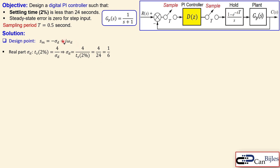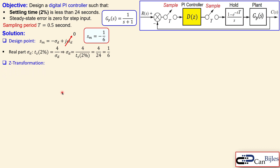Can we also determine omega_d? Omega_d is zero. The only specification besides settling time is zero steady state error, which means there must be a pole at the origin in the S domain (a pole at plus one in the Z domain). There is no overshoot criterion or peak time criterion, so omega_d can be considered as zero. We stick to only the real value, which is sufficient. Our design point in the S domain is therefore only minus sigma_d, which is minus one over six.